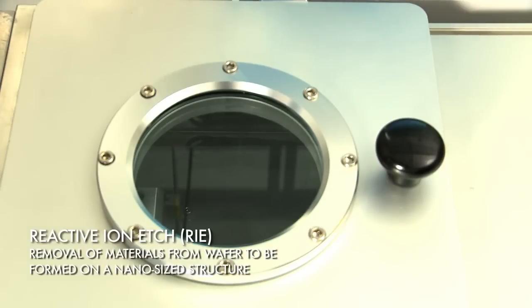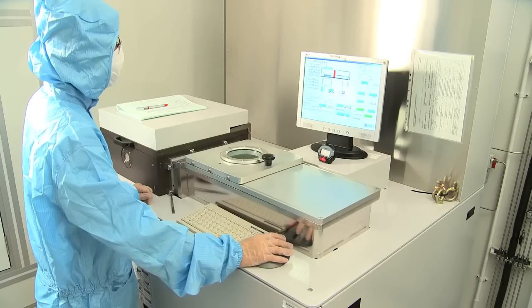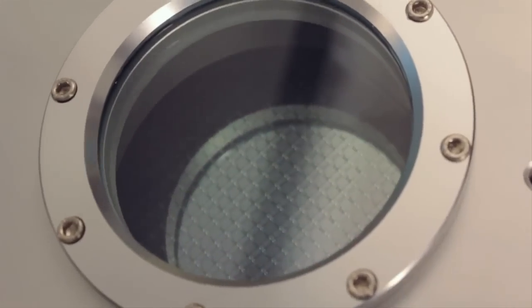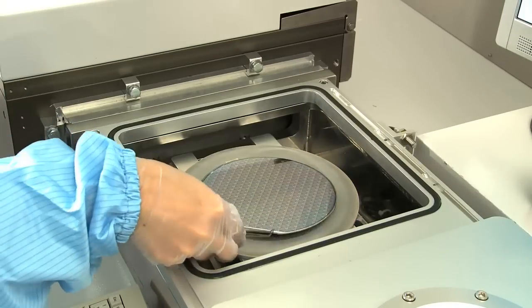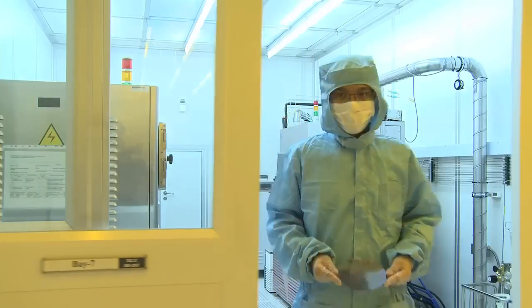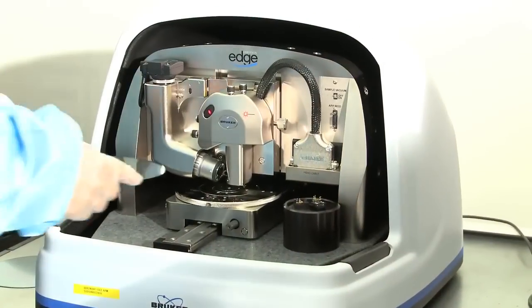An example is the Nanyang Nanofabrication Center, which is well-equipped with two Class 10 and Class 100 clean rooms with a total area of 1,400 square meters. The Metal Organic Chemical Vapor Deposition Room is also housed there.